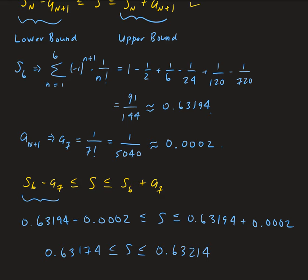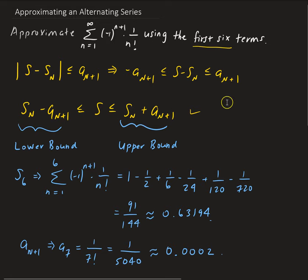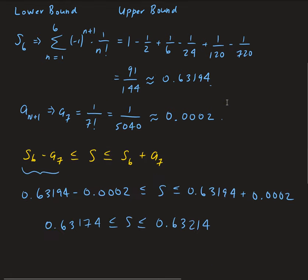As we increase the number of terms, this approximation will get better and better. As the number of terms goes to infinity, we get a better approximation — the partial sums s_n will get closer and closer to s, the actual sum.